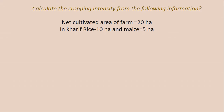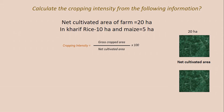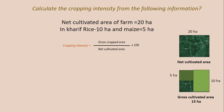Problem 2: Calculate cropping intensity where the net cultivated area is 20 hectares and in kharif season, rice is cultivated in 10 hectares and maize in 5 hectares. The gross cultivated area is 15 hectares. Using the formula: 15 ÷ 20 × 100 = 75%. So in this case the cropping intensity is 75%.